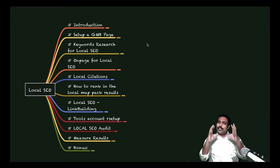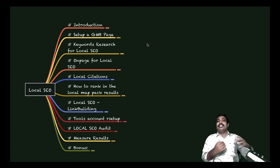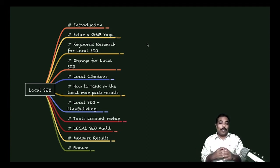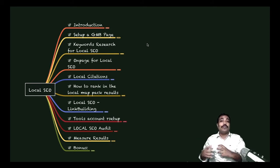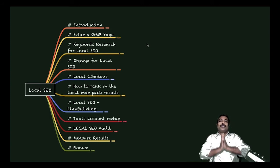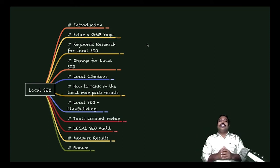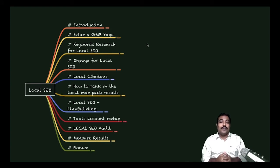Then link building for local SEO. Then account setup — what different tools are available, especially from Google. We'll look into that, then talk about local SEO audit — especially focused on local. And at last, measuring our results: what things we need to measure, how to understand local SEO audit, local website optimization, and some bonuses on how to rank your website. That's what we're covering in this video.